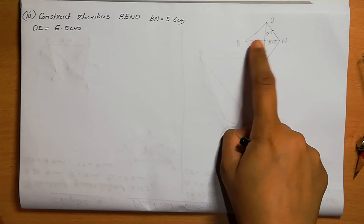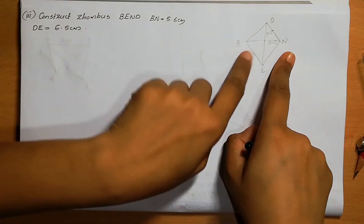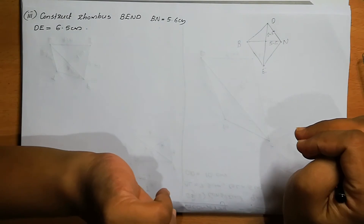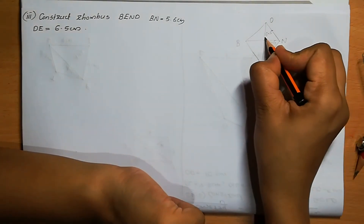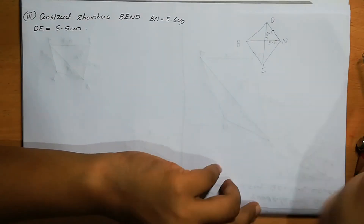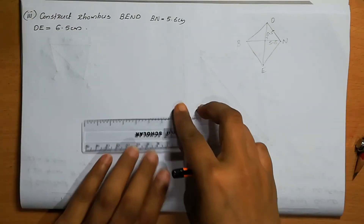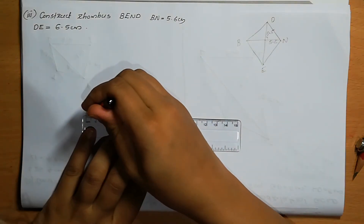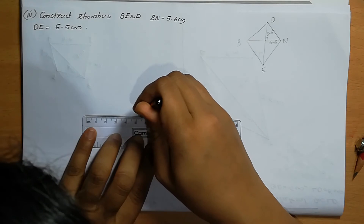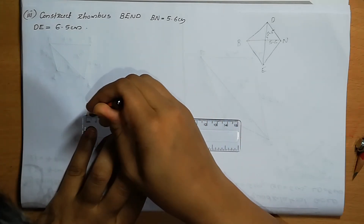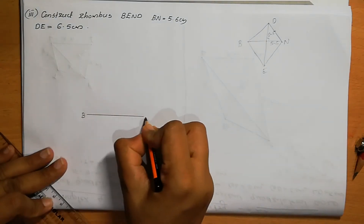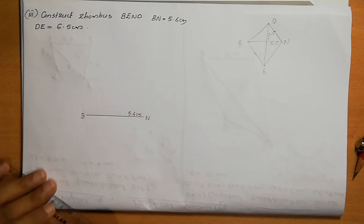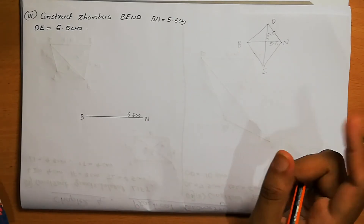So how we can draw this? First we can draw the diagonal BN. The property of diagonals of a rhombus: the diagonals of a rhombus bisect each other — bisect means cut into two equal parts — at 90 degrees. So diagonals of the rhombus bisect each other at 90 degrees. First we can draw BN = 5.6 cm.